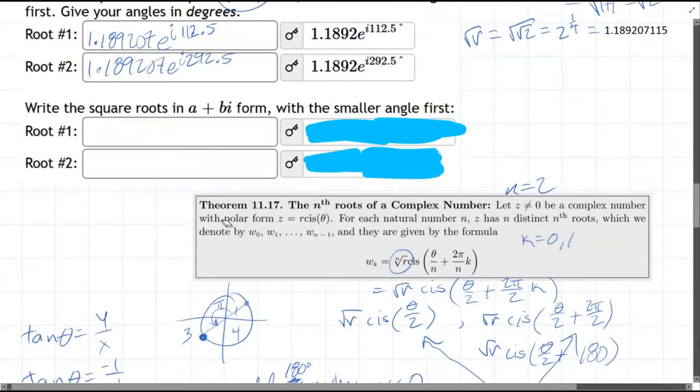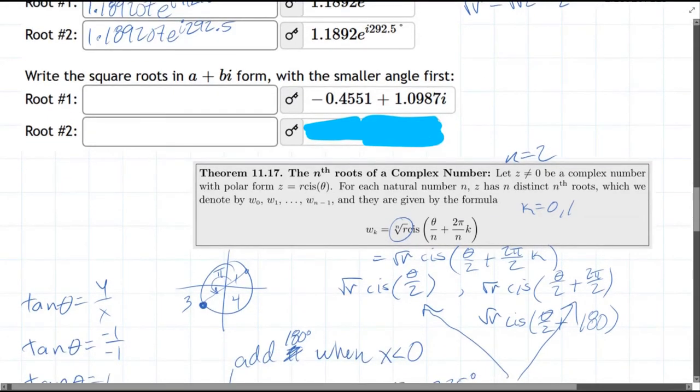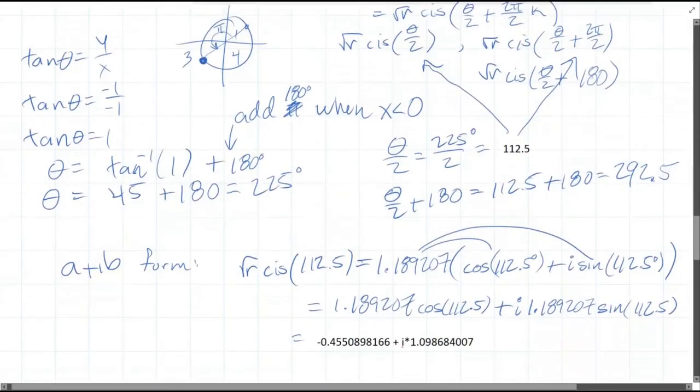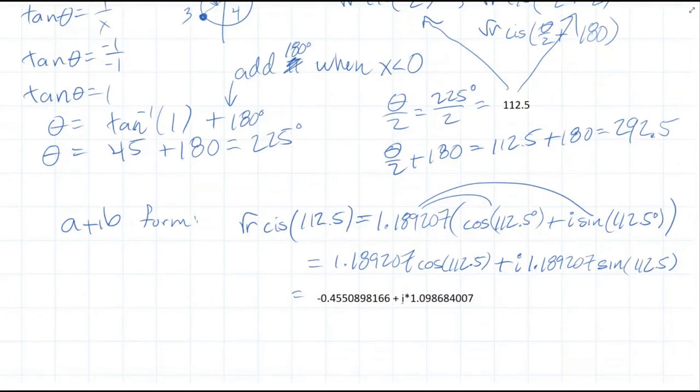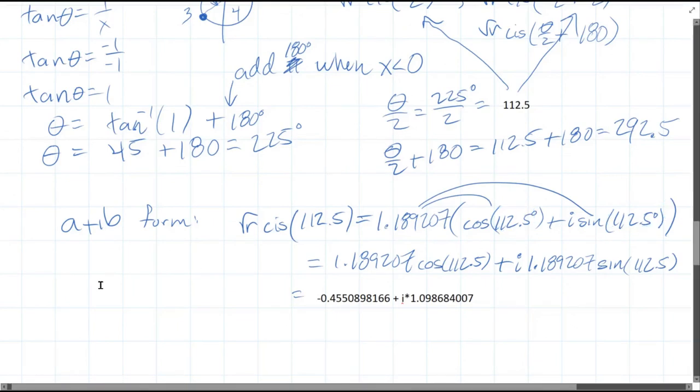Let's go ahead and uncover that one. Now how do you get root 2? Do the exact same thing we did except you're going to use the other angle right here. So you're going to use 292.5 but otherwise exactly the same procedure.